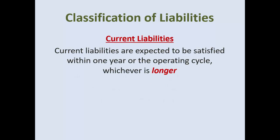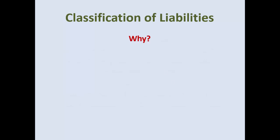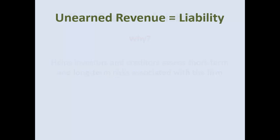Classifying liabilities: current liabilities are expected to be satisfied within one year or the operating cycle, whichever is longer. Long-term liabilities is going to be everything else that will not be satisfied during that time period. We classify because it helps investors and creditors assess the short and long-term risks associated with the company.